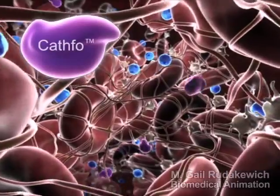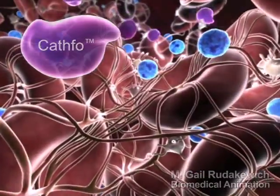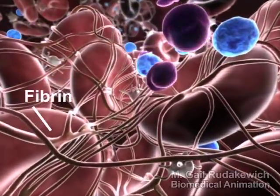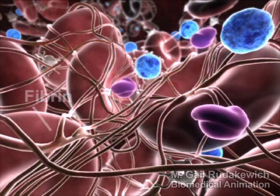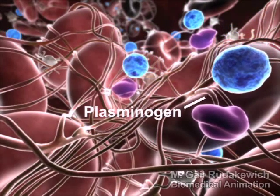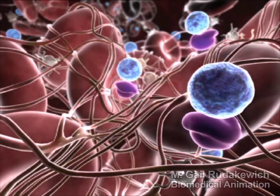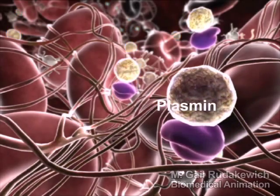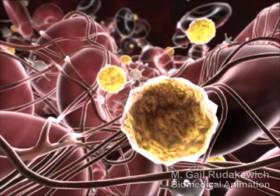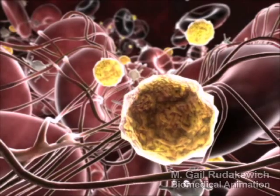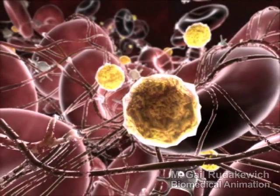Unlike heparin, Cathflow is a fibrinolytic specifically designed to target and dissolve the fibrin within the clot. It does so by bonding to plasminogen, converting it to plasmin, which in turn breaks apart the strands of fibrin within a clot, initiating fibrinolysis.